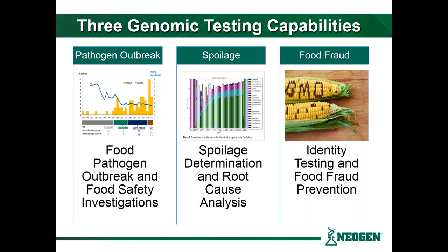We really like to break down food safety genomics and next generation sequencing into three big buckets. The first is pathogen outbreak — where whole genome sequencing and other applications reside around identification and antimicrobial resistance. The second is microbiome research, spoilage, changes in microflora, and shelf life analysis. The last one is food fraud: meat species identification, GMO testing — all of those fall in that last bucket.